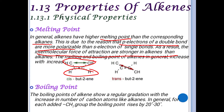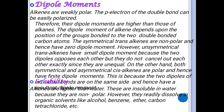The boiling points of alkenes show a regular gradation with increasing number of carbon atoms, similar to alkanes. Regarding dipole moments, alkenes are weakly polar because the double bond can be easily polarized, so dipole moments are higher than those of alkanes. The dipole moment depends on the position of groups bonded to the double-bonded carbons. Symmetrical trans alkenes are non-polar and have zero dipole moment.